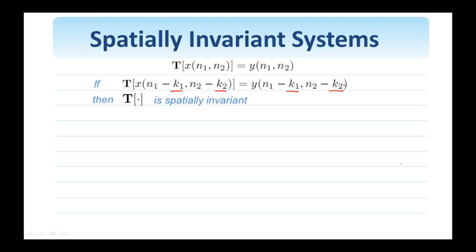This property is important by itself, but even more important when combined with linearity, as we're going to see right away. Now, this property is independent of linearity, so if we consider the system we looked at earlier, which for an input x(n1, n2) generates as output 255 minus x(n1, n2). So this system finds the negative of an 8-bit image. We saw that this system is non-linear.